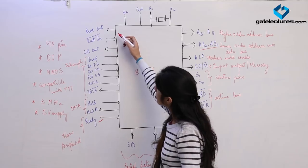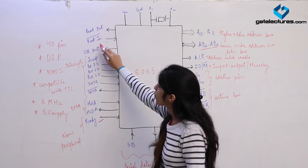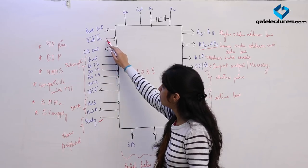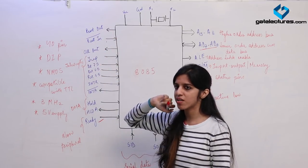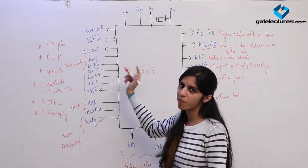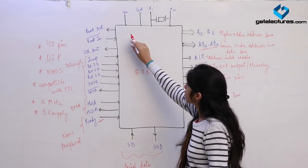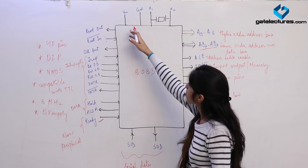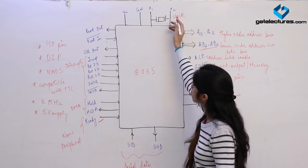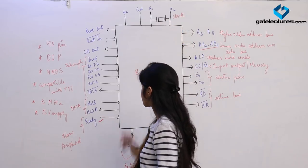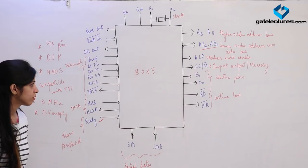RESET IN-bar is an active low pin used to reset the microprocessor. RESET OUT is also provided. CLOCK OUT is used when interfacing a device that does not have its own clock — the microprocessor outputs its clock to synchronize the device. VCC and GND provide the 5-volt supply. X1 and X2 are the clock pins for the 3 MHz frequency clock used by the 8085 microprocessor.